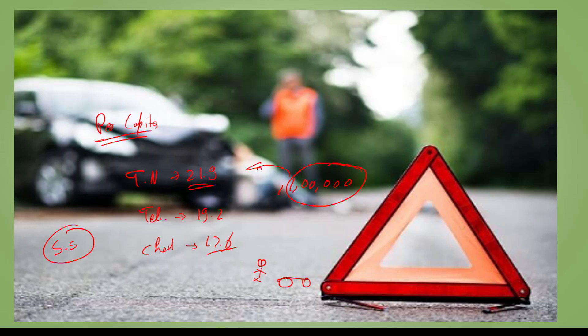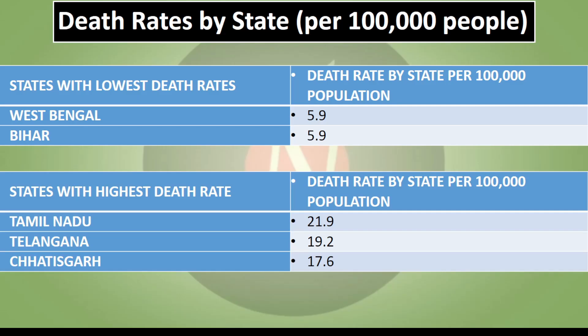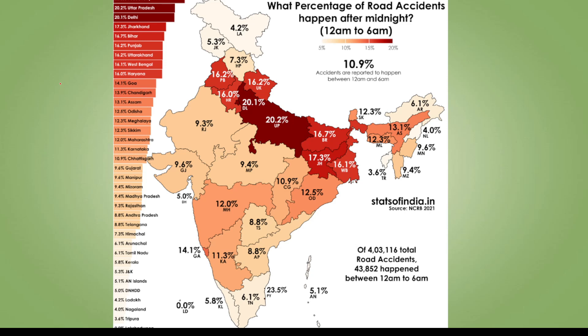The report identifies pedestrians, cyclists, and motorized two-wheeler riders as the most vulnerable road users. Trucks are responsible for the highest proportion of vehicle-impact deaths. Despite the life-saving potential of helmets, only about 50% of two-wheeler riders wear helmets, and this is observed in more than 7 states.